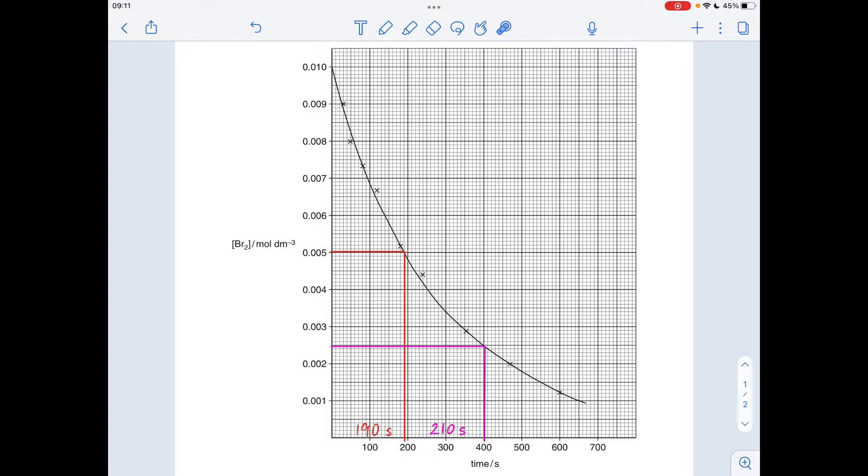So what you can say from that is the order of reaction with respect to bromine is one, first order, because the first two half-lives are approximately the same. Sometimes you don't get identical time periods. As long as they're broadly similar, then you can make that assumption that it's first order.